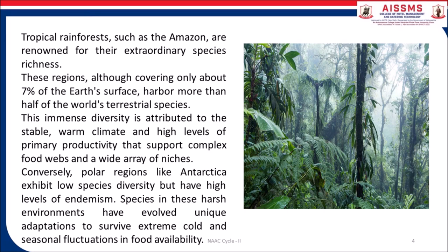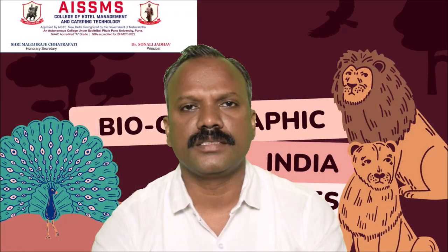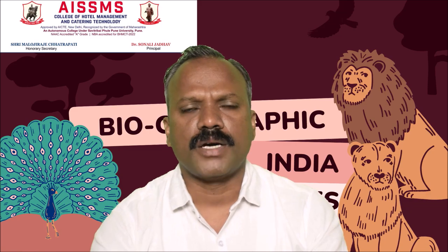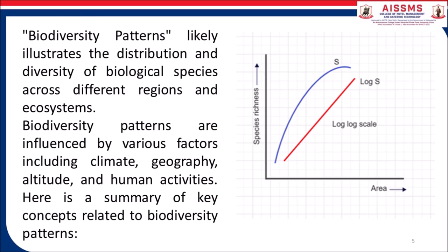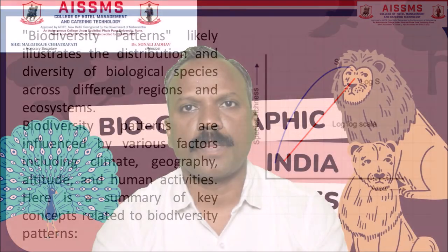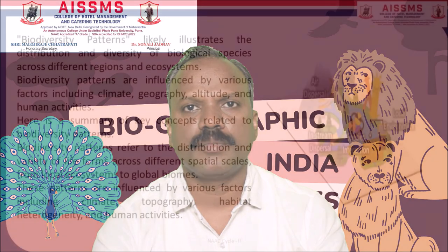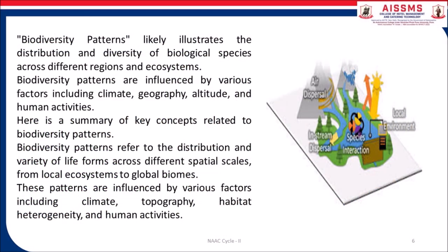Species in harsh polar environments have evolved unique adaptations to survive extreme cold and seasonal fluctuations in food availability. Biodiversity patterns illustrate the distribution and diversity of biological species across different regions and ecosystems. Key concepts include: biodiversity patterns refer to the distribution and variety of life forms across different spatial scales, from local ecosystems to global biomes.